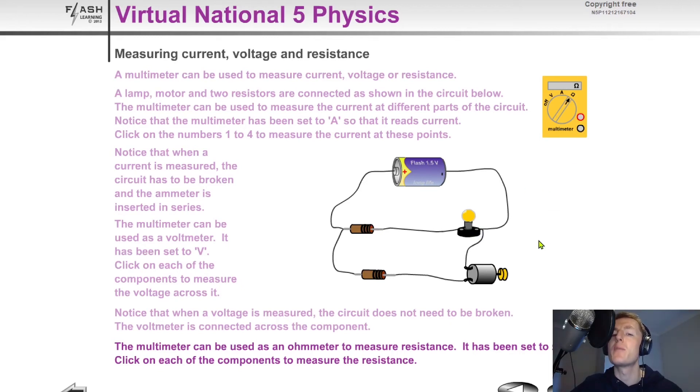For example, if we wanted to measure the resistance of this component here, we take it out of the circuit and this would give you a reading on the ohmmeter. You could also do the same for the bulb, and for this resistor, and for this motor, and you see they're giving us readings of ohms on the screen on the ohmmeter.